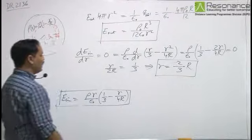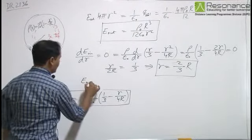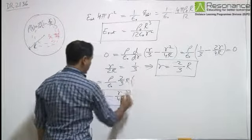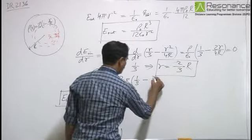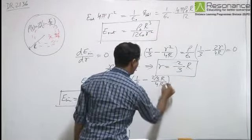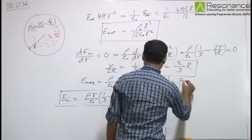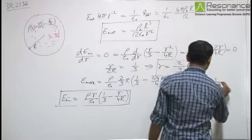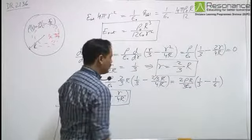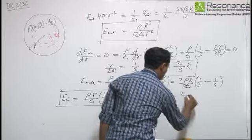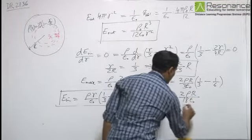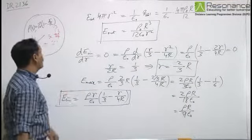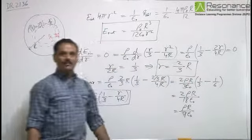At a distance r = 2R/3, the electric field is maximum. Substituting back: E_max = (ρ₀/ε₀) · (2R/3)(1/3 - (2R/3)/4R) = (ρ₀/ε₀) · (2R/3)(1/3 - 1/6) = (ρ₀/ε₀) · (2R/3)(1/6) = ρ₀R/(9ε₀). This is the maximum electric field, occurring at distance 2R/3 inside the sphere.